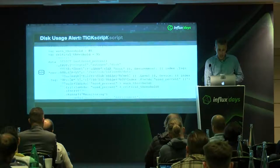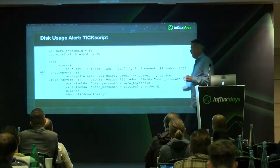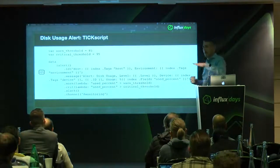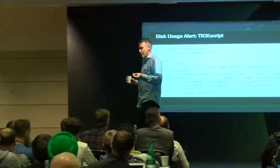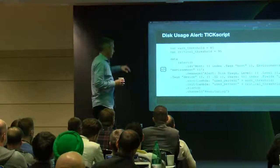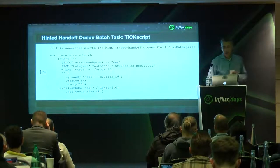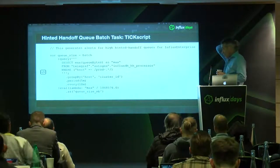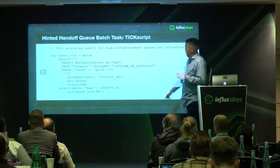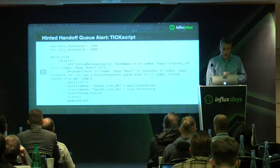This is the alert side of the disk usage TICKscript. If I detect disk usage beyond certain thresholds, I generate an alert. I've got a warning threshold at 85% and a critical threshold at 95%. You can set it up so that a warning sends an alert to Slack while a pageable event goes to PagerDuty or OpsGenie, changing that based on those different thresholds. Similarly for the hinted handoff queue — we're looking at max queue bytes over a 5-minute period, evaluating every 10 minutes. The alert is set at a warning of 3.5 gigabytes, and half a gigabyte — half the size of the hinted handoff queue — is when someone gets paged.